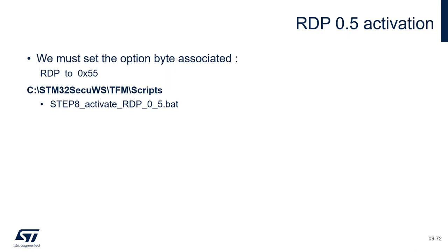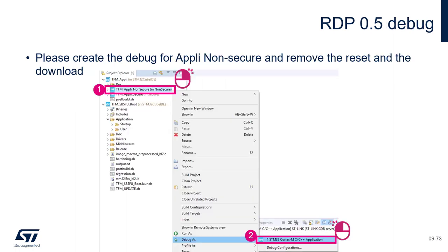On that note, we will activate RDP in just one option byte, and you have a step 8 batch script to do it. Then we will see how to configure CubeIDE to connect and debug the non-secure application.